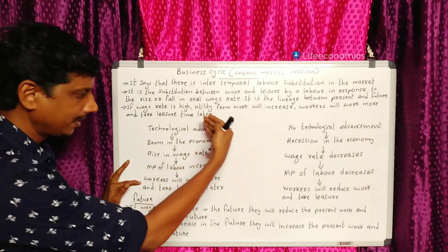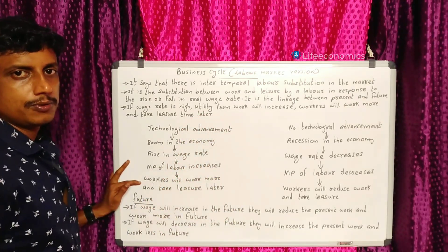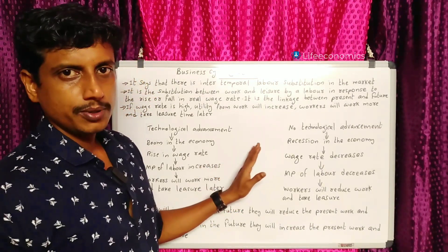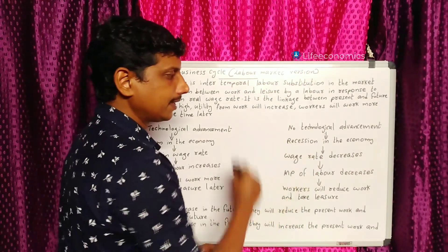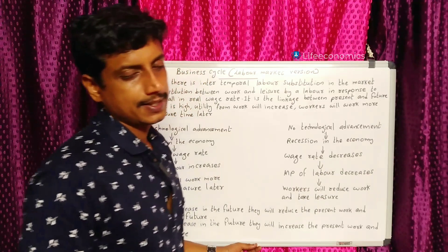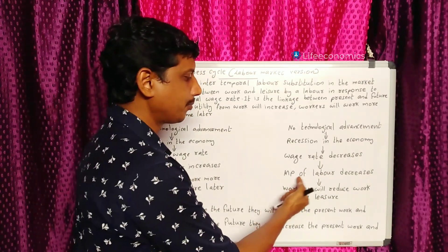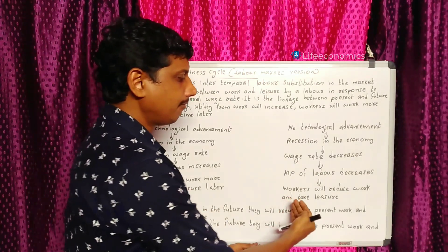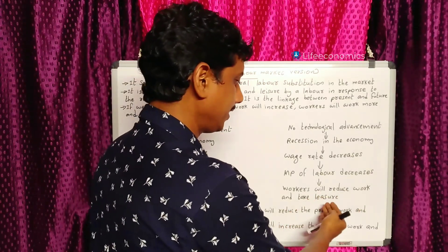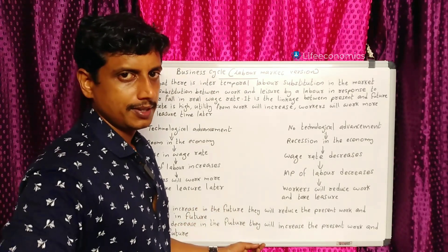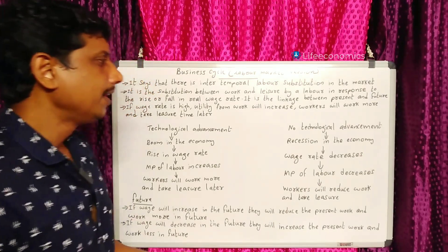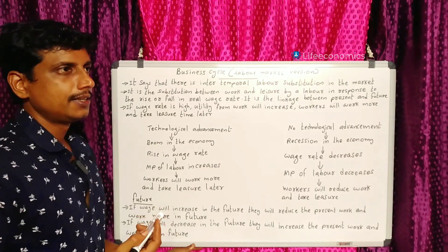If there is no technological advancement, there is a recession in the economy. During a recession, workers will reduce work and take more leisure time. This is the business cycle.